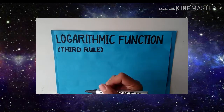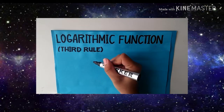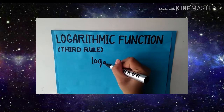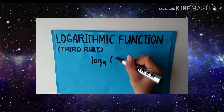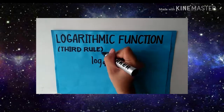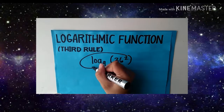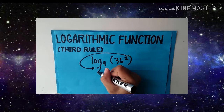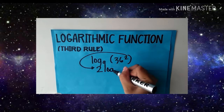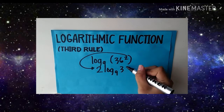Our last rule involves exponents and it's very simple. Logarithm of 36 squared with base 9 — all we need to do is transfer the exponent to the other side, then copy log base 9 of 36. So 2 times log base 9 of 36 will be the final answer.